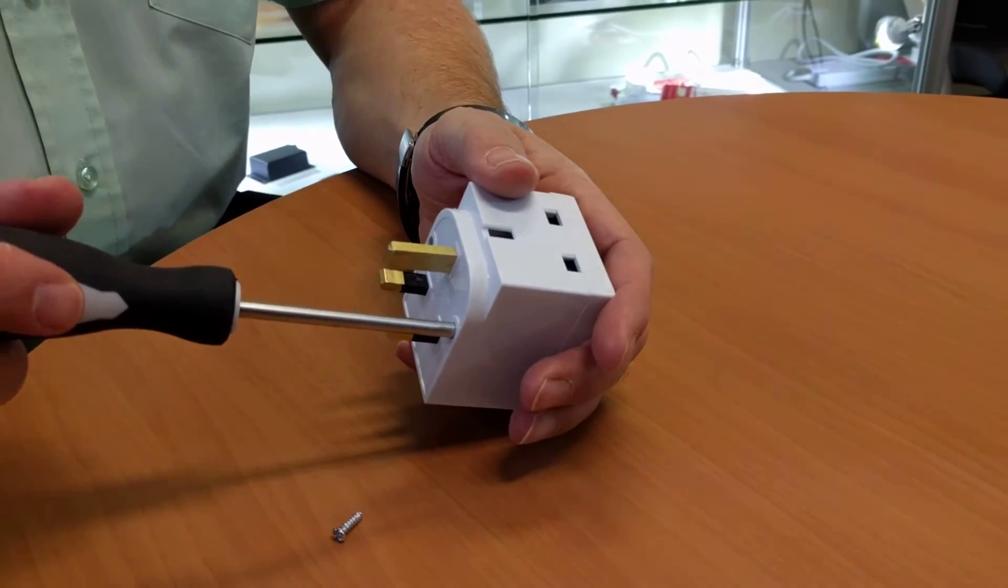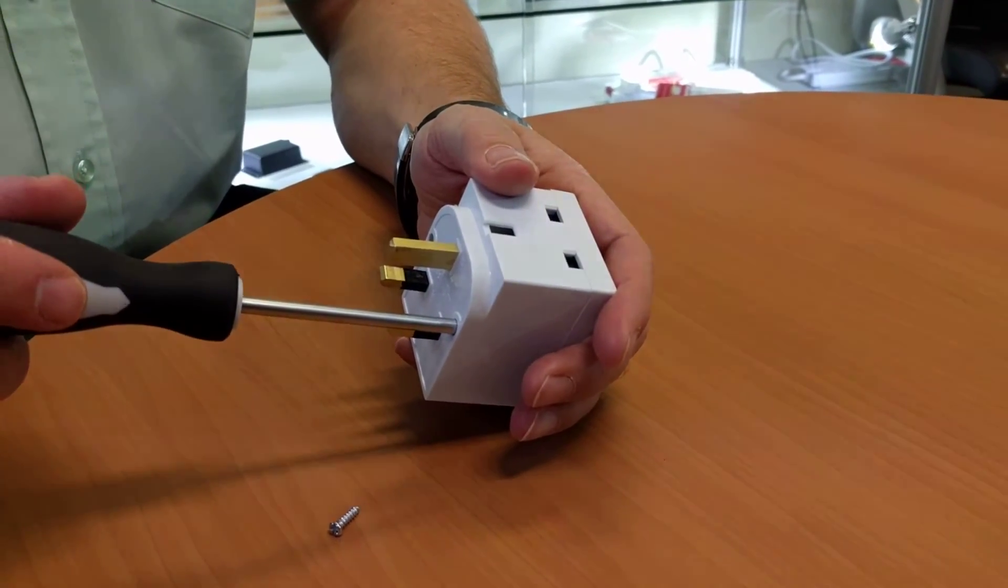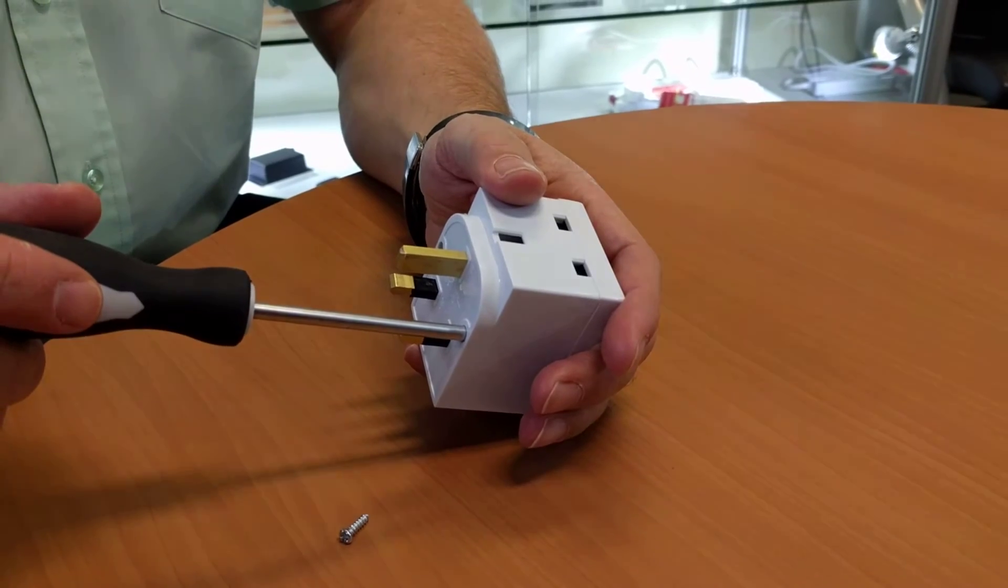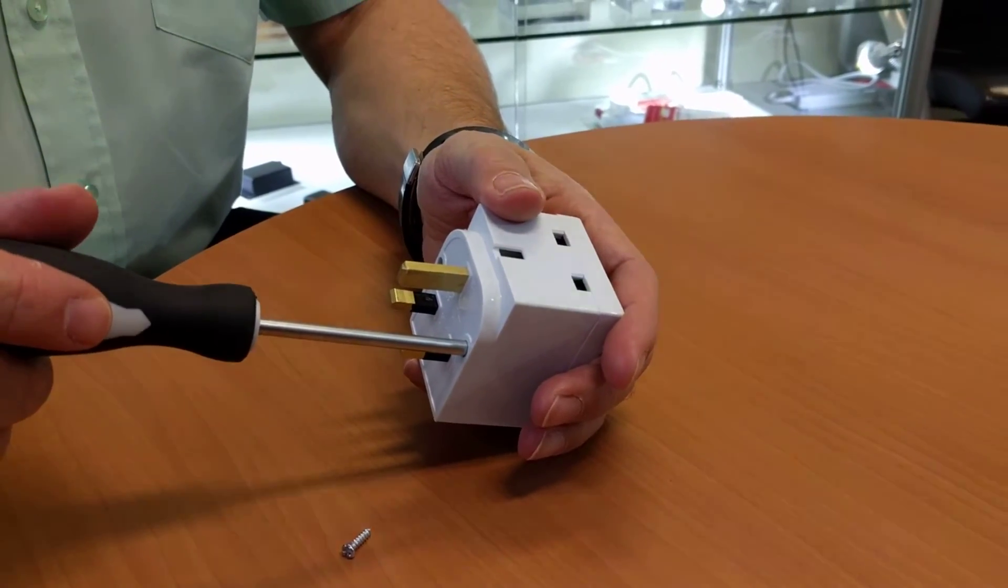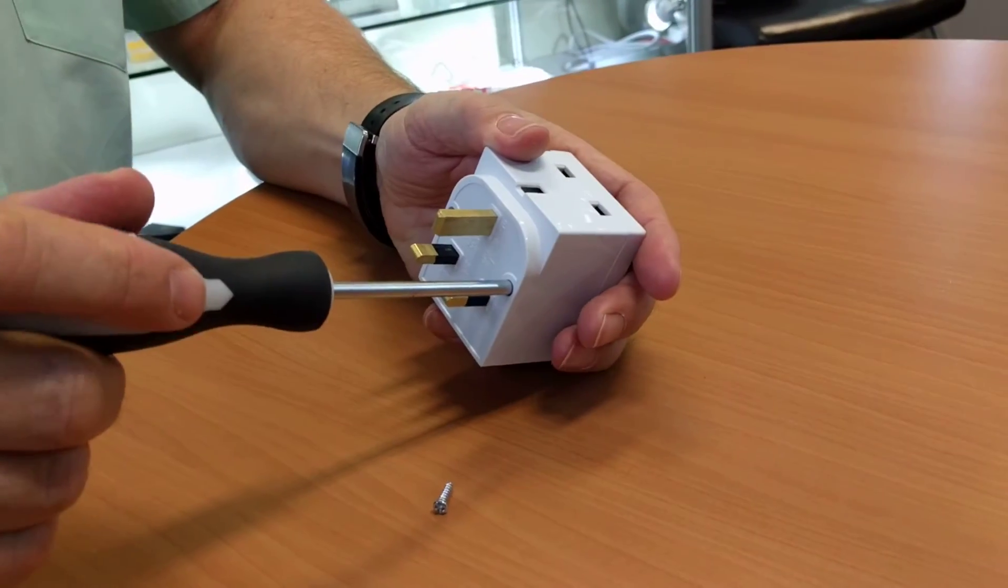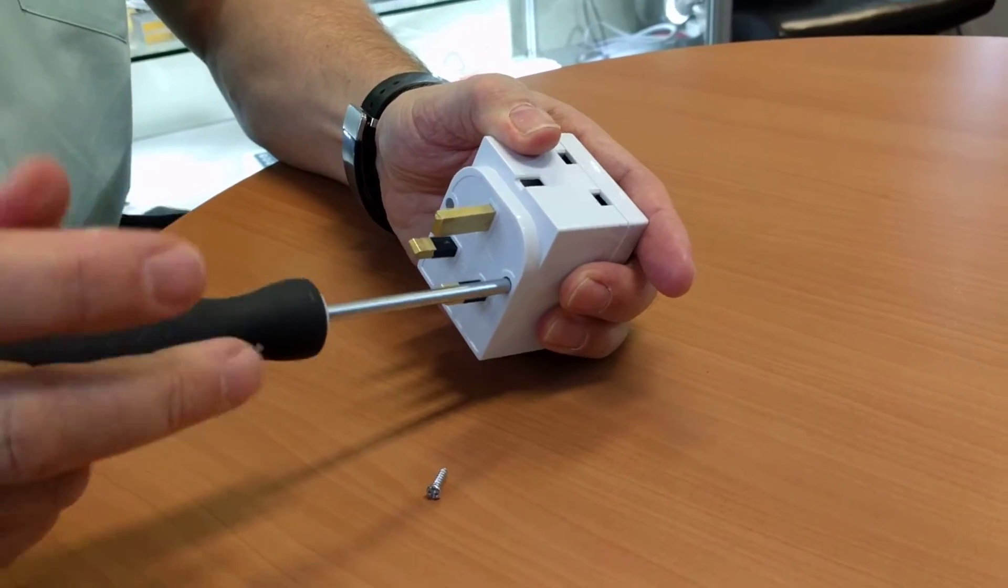Okay, we're going to demonstrate here how to change the SIM on the double adapter recorder because some people can get it the wrong way around. I've taken one screw out already and I'm just taking the second one out to take the device apart.